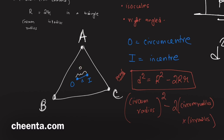So the circumcenter and incenter coincide — their distance is zero. For what kind of triangle does this happen? Think about it: the circumcenter is found by the perpendicular bisectors of the three sides, which all meet at a single point, while the incenter is found by the angle bisectors of the triangle.